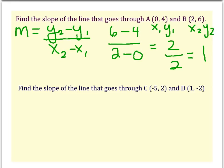y2 minus y1 over x2 minus x1. I'm going to label point C as x1, y1, and D as x2, y2, and plug it into my formula. On the top I take my y's and subtract them, so negative 2 minus 2, and in the denominator I take my x's and subtract them.